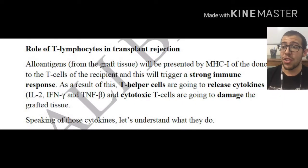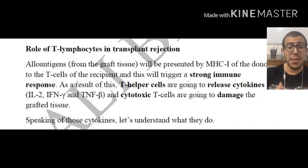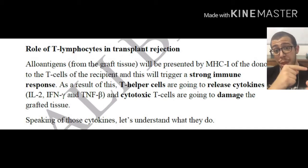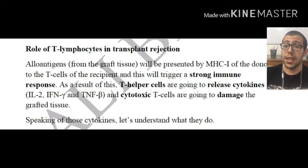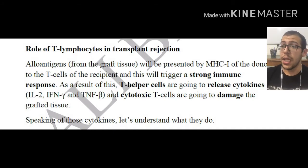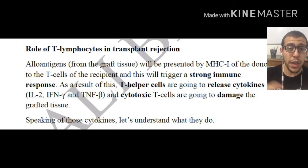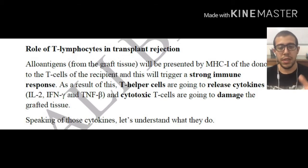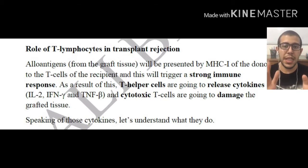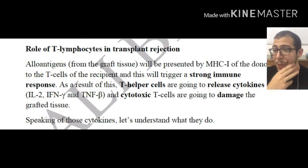Alloantigens from the graft tissue are going to be presented by the MHC class 1 that are present on their cells to the T cells of the recipient. This is going to be triggering a strong immune response — naturally, in the presence of a graft when we detect them, the response is usually strong.